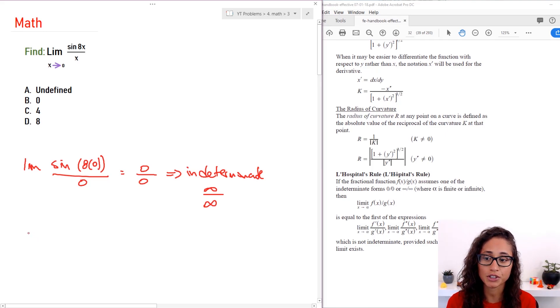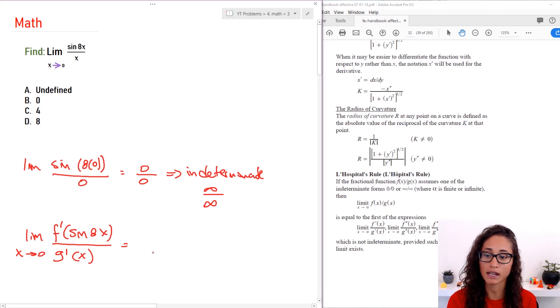So what I'm going to do here is take the limit of the sine of 8x first. So let's do f prime of sine of 8x, and then we're going to do the derivative of x. So let's take the derivative of sine of 8x. The derivative of that is just going to be 8 cosine of 8x. The derivative of sine is cosine.